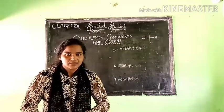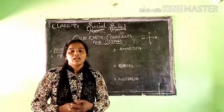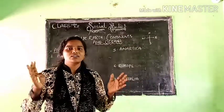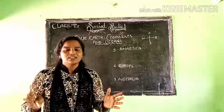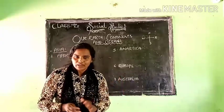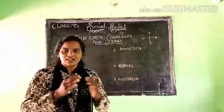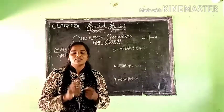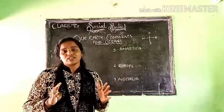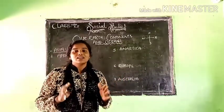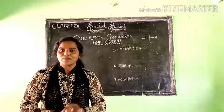What is the definition of continent? Continent is the big land mass on the surface of the earth that is surrounded by water on all sides.